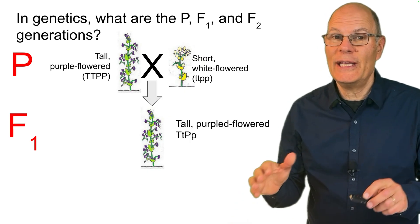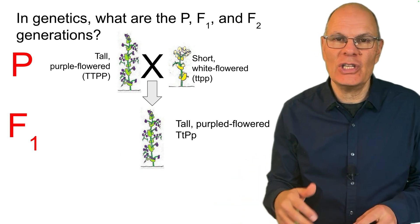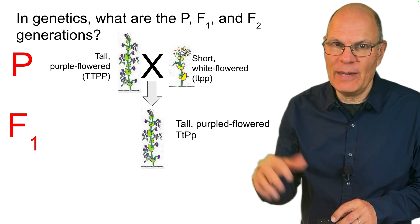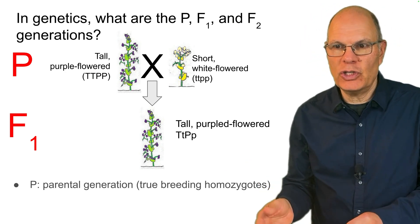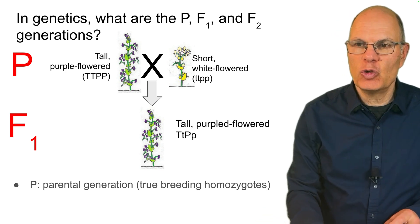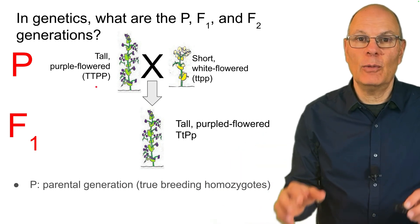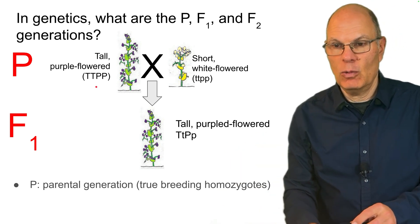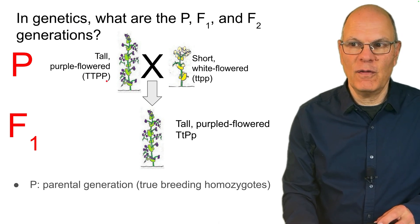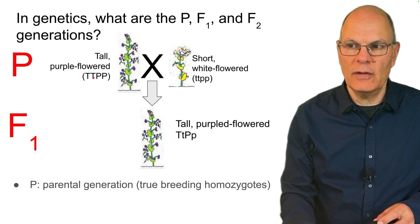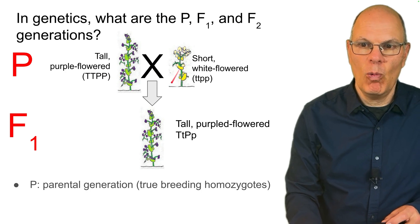In genetics, what are the P, F1, and F2 generations? This is common notation used in genetics that AP biology students need to understand. The P generation is the parental generation — in general, they're true-breeding homozygotes. In this example we've jumped in complexity: we're dealing with two genes — one for tallness and one for flower color. The alternatives are tall versus short and purple flowers versus white flowers.